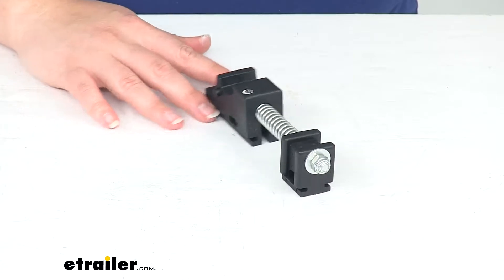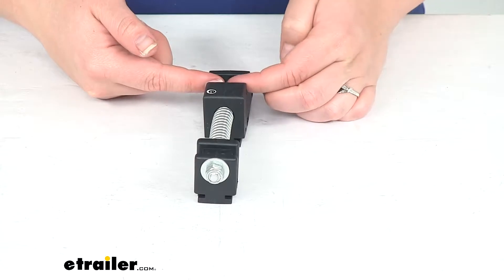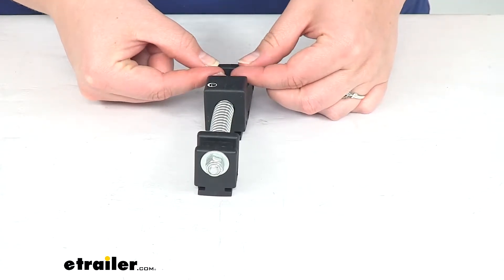Now, this is for the driver's side of your tonneau cover, and basically this little latch is going to be that first point that our tonneau cover rests in to keep the tension on it.